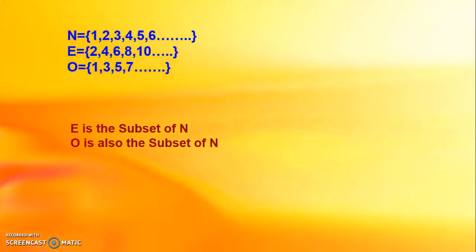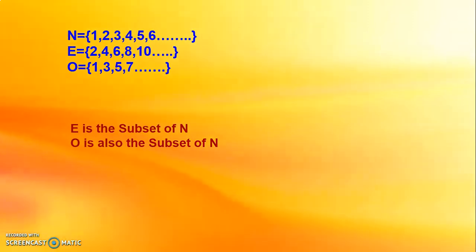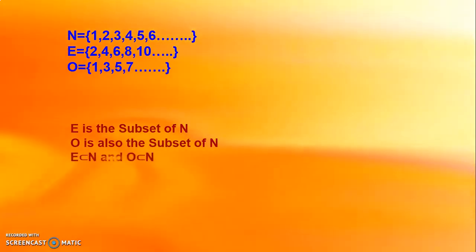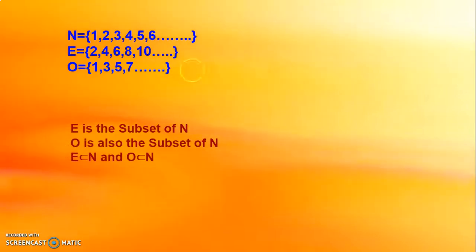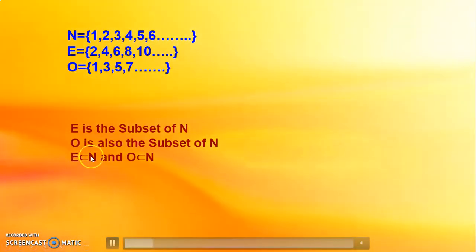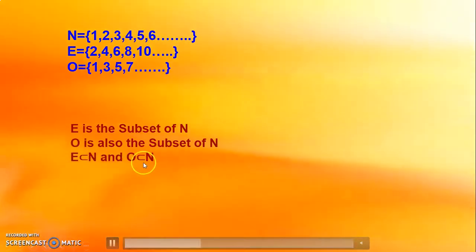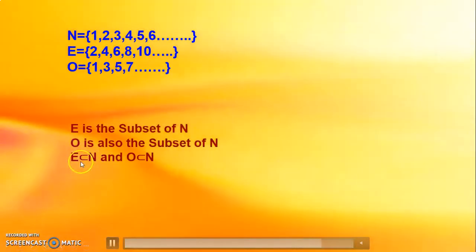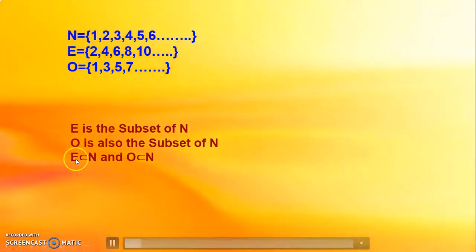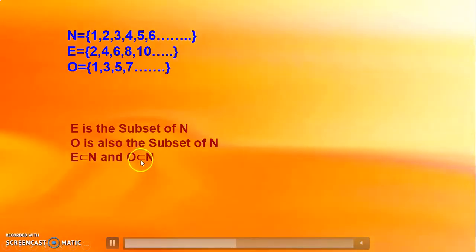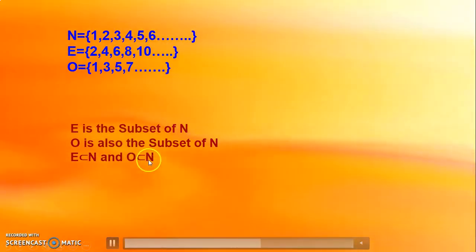Now observe the symbol — how do we write this statement at the mathematical level? Look here, children. E is the subset of N — this is the notation. And O is also the subset of N. This is the symbol used to represent subset. We read these as: E is the subset of N, and O is the subset of N.